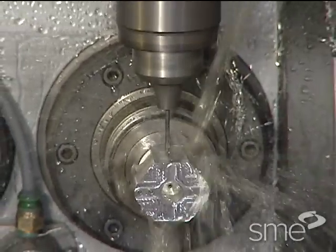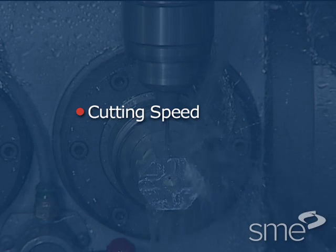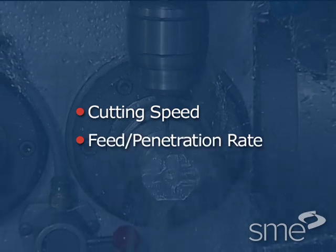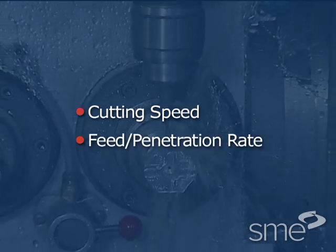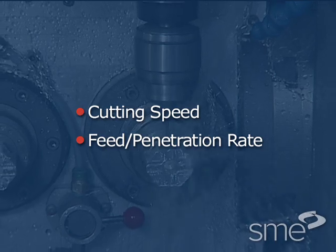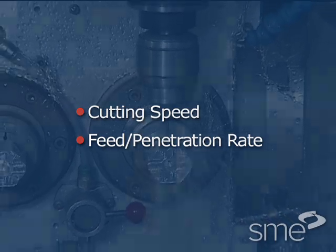The key operating parameters in drilling include cutting speed and feed or penetration rate. Drilling conditions influence these parameter selections.